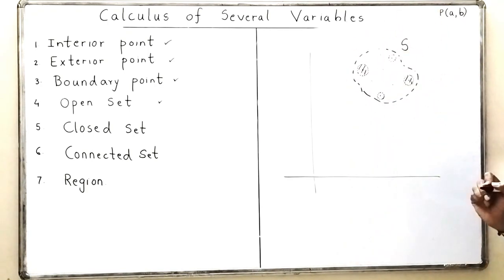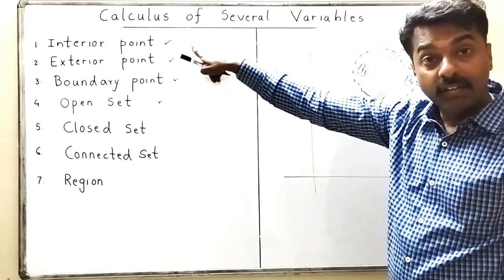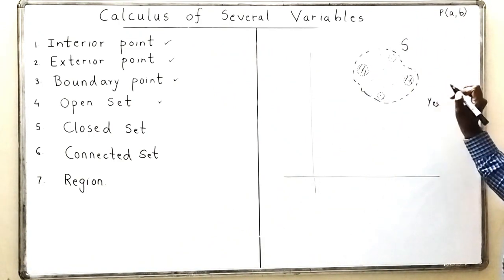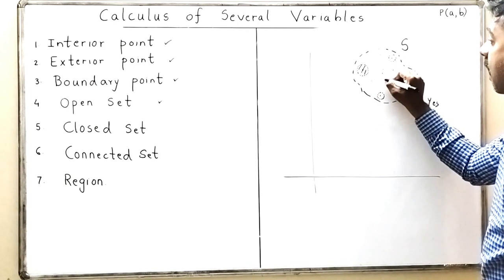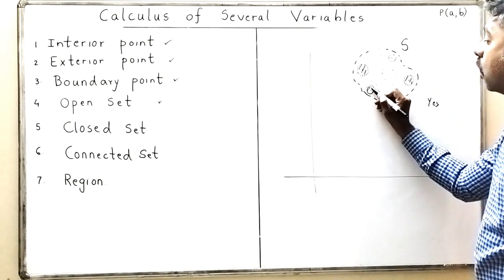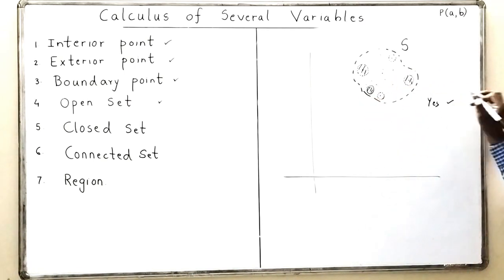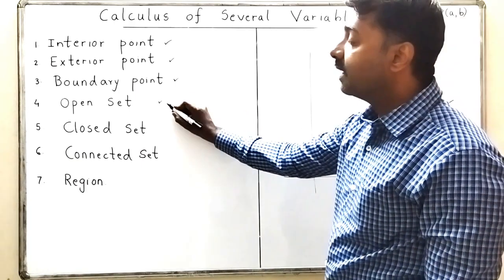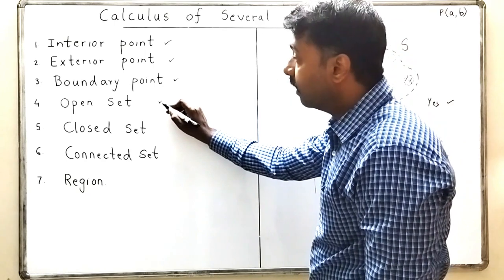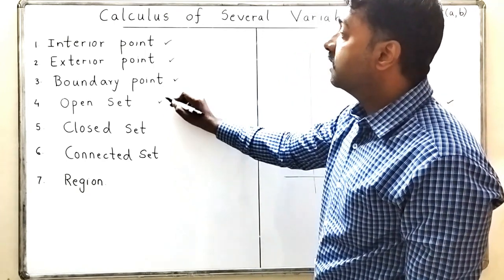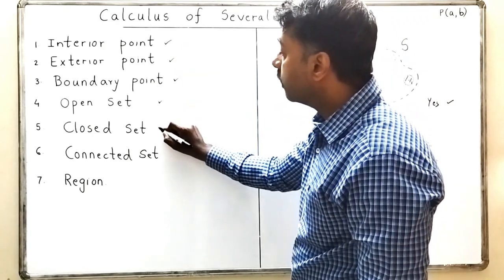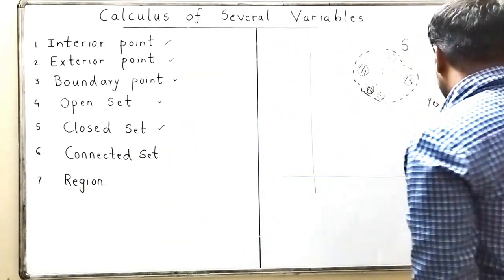For every point which is inside the set S, I ask the same question: is it an interior point? And for all the points, I am getting the answer yes. All points in this set are interior points — meaning take any neighborhood, it will not go outside the set. If such a thing happens, then I will call that set to be an open set. So all the points of this set must be interior points.